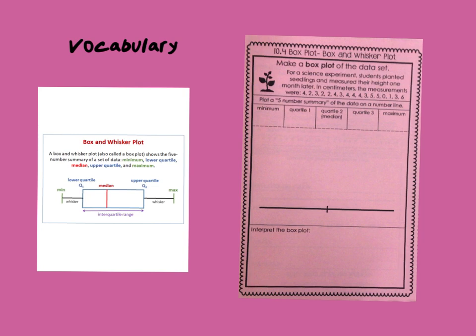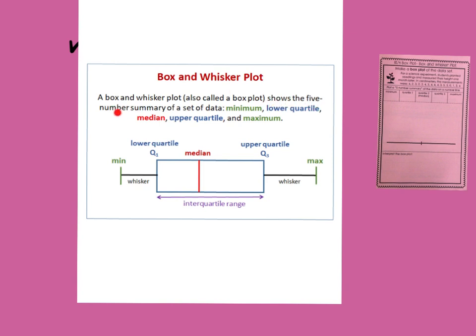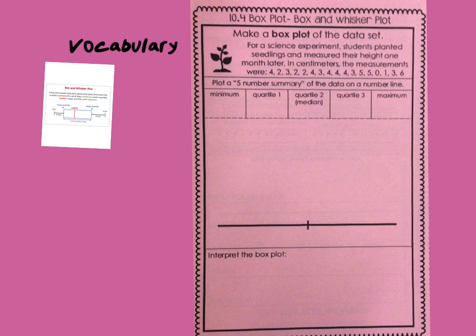Today's lesson is all about box plots. If you remember that we found the IQR — the IQR is part of this. If you can find the IQR, it's really simple to make a box and whisker plot. The box and whisker plot, also known as a box plot, shows the five-number summary of a set of data: the minimum, the lower quartile, the median, the upper quartile, and the maximum. We will show you how to build one on this example.